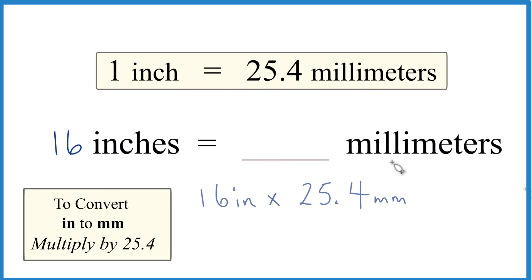Like this. And remember that 25.4 millimeters in one inch, per inch, so we can call it millimeters over inches.